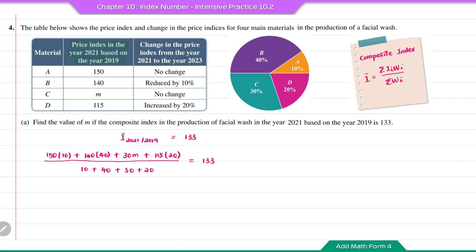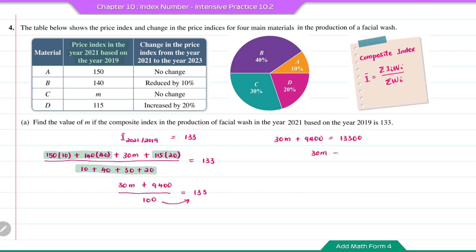Solving the equation: 30M plus 9400 over 100 equals 133. Moving 100 to the right: 30M plus 9400 equals 13300. Then 30M equals 13300 minus 9400, which is 3900. Therefore M equals 3900 divided by 30, which is equal to 130.